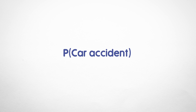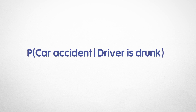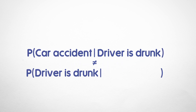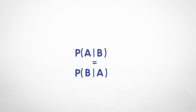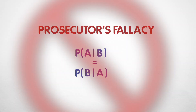In statistical terms, this can be expressed by saying that the probability of a car accident given the driver is drunk is not the same as the probability of a driver being drunk given an accident. Conflating these two probabilities is known as the prosecutor's fallacy.